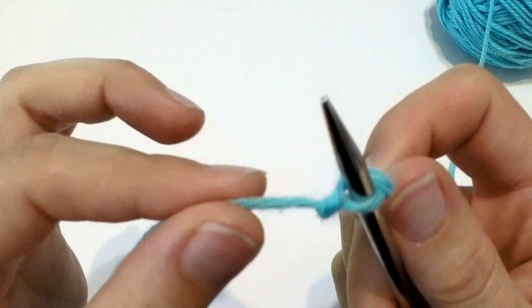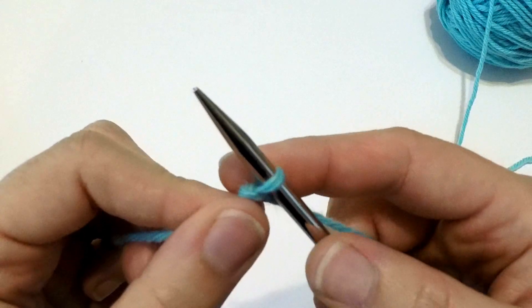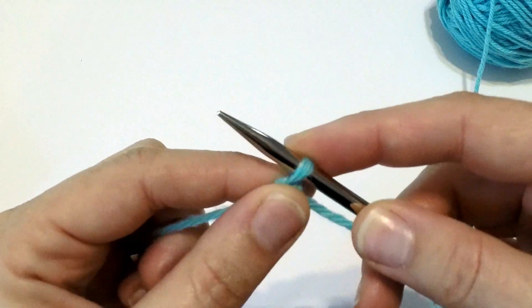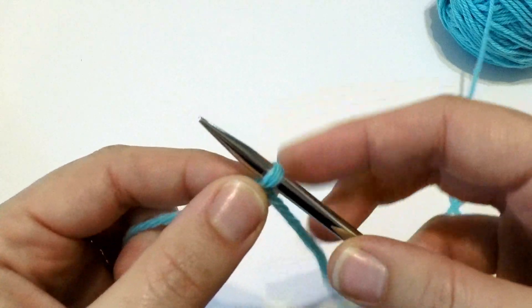Now you want to tug it all the way so that there's a loop on the needle and a little knot. It's a slipknot under the needle.